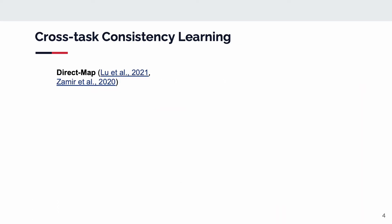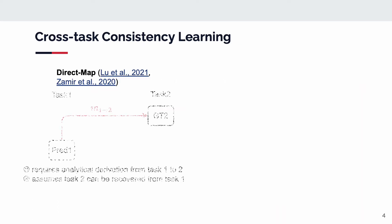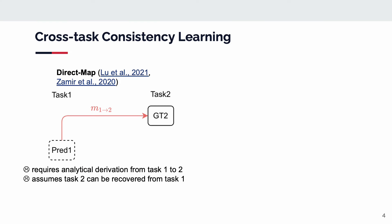To regulate the cross-task consistency, given the prediction of unlabeled tasks and the ground truth of labeled tasks, one can use a mapping function to map predictions of unlabeled tasks to the labeled task's ground truth space, and compare the mapped output with ground truth. However, this direct mapping strategy requires analytical derivation from task 1 to task 2, and it assumes task 2 can be recovered from task 1.